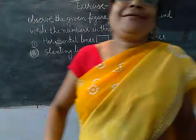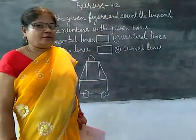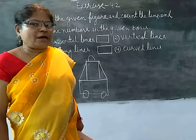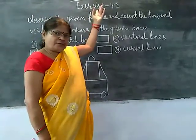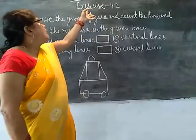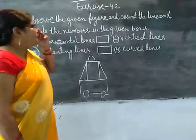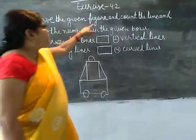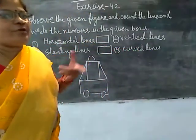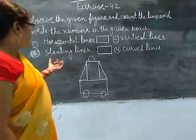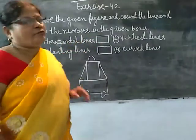Good morning, student. Good morning. I am going to teach you exercise 0.2. Now keep the email here at the top of the line and write the numbers in the given boxes. The lines are like horizontal line, vertical line, slanting line, and curved line.